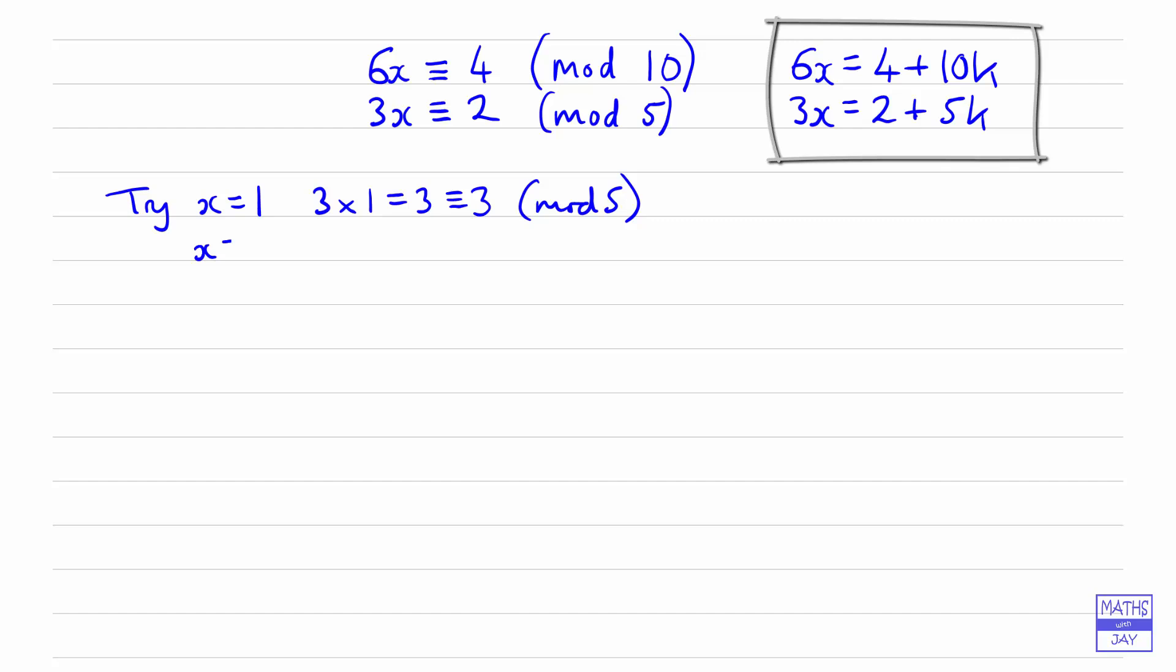If we try x equal to 2, we get 3 times 2 is 6, and in mod 5 that's going to be 1.